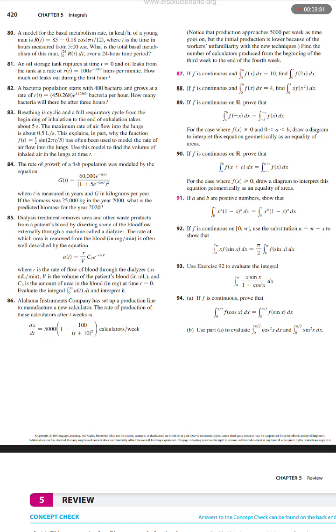The growth rate of a fish population was modeled by the equation G(t) equals 60,000 e to the power negative 0.6t over (1 plus 5 times e to the power negative 0.6t) squared, where t is measured in years and G in kilograms per year. If the biomass was 25,000 kilograms in the year 2000, what is the predicted biomass for the year 2020?